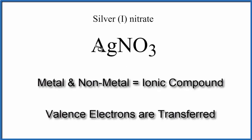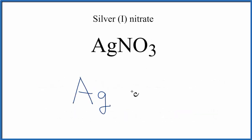The silver, the metal, is going to transfer electrons to the non-metals. So we write Ag, and then we'll write NO3.